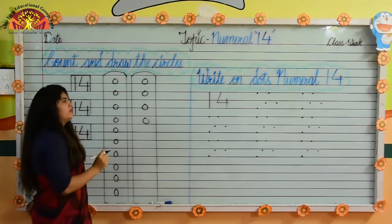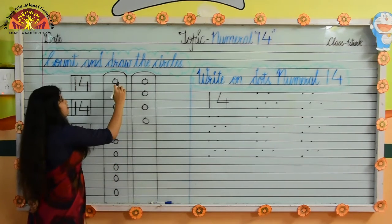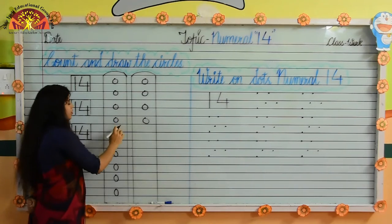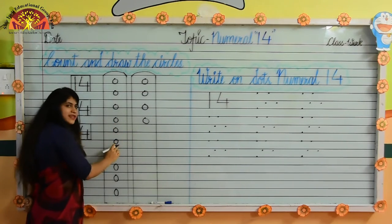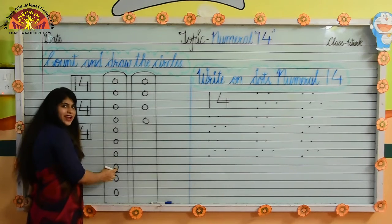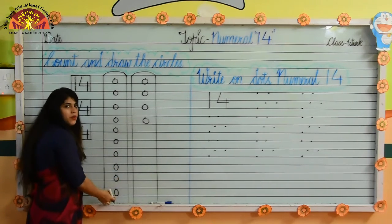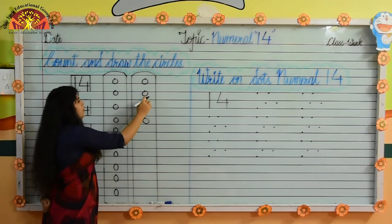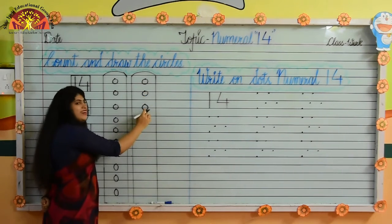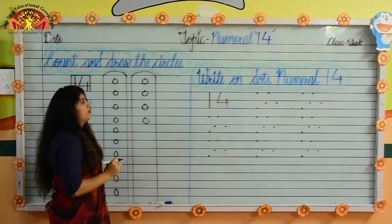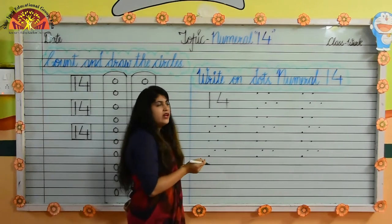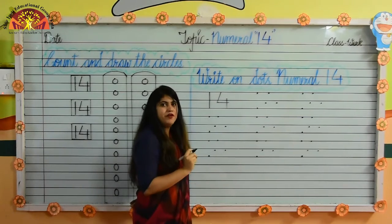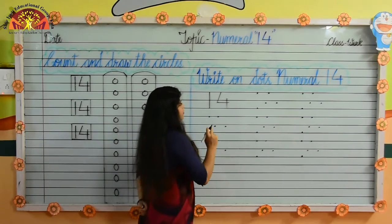Now count it again. 1, 2, 3, 4, 5, 6, 7, 8, 9, 10, 11, 12, 13, 14. So kids, look it over here. Write on dots, numeral 14.